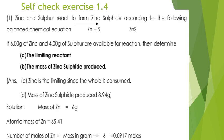Self-check Exercise 1.4: Zinc and sulfur react to form zinc sulfide (ZnS) according to: Zn + S → ZnS. If 6 grams of zinc and 4 grams of sulfur are available, determine (1) the limiting reactant and (2) the mass of zinc sulfide produced. First, convert grams to moles. Zinc has molar mass 65.41 g/mol, so 6 g ÷ 65.41 = 0.0917 moles of zinc.